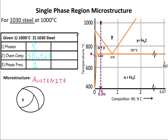Now that we've looked at eutectoid steels, we're going to look at hypo-eutectoid steels and their microstructures. For 1030 steel at 1,000 degrees Celsius, we need to find the microstructure. Here are the calculations from last time. We can see that our microstructure is still just single-phase austenite. It looks exactly the same as before at the eutectoid composition, except its composition is now 0.38% carbon instead of 0.76% carbon.